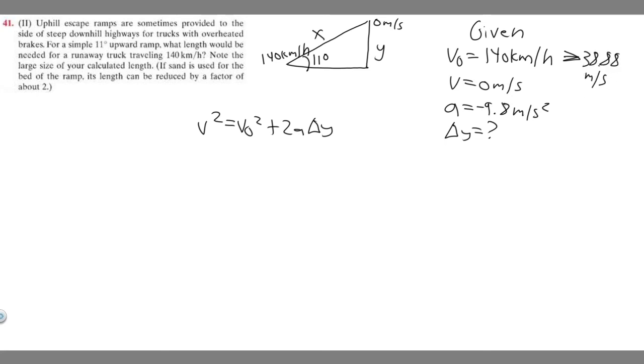And now we can just plug in. So v squared, 0 squared is 0, equals initial velocity 38.88 squared plus 2 times minus 9.8 times delta y.